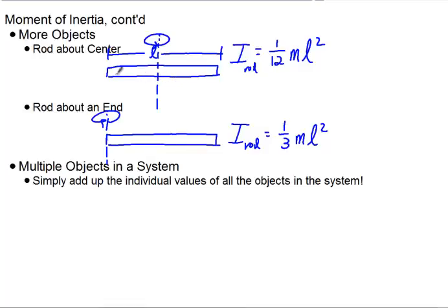About the center, there's equal masses on each side. About its end, all the masses on one side. So there will be more inertia when it's being rotated about its end.